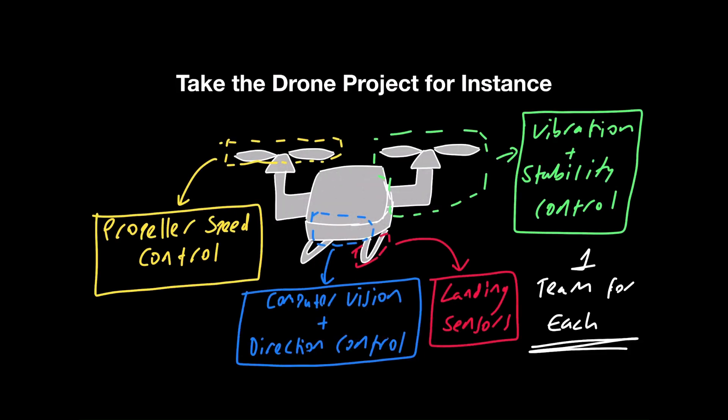Modularity is a very important design principle, as it can allow for more efficient design. The idea is to use teams of engineers and other professions to design hardware and software for a part of an overall design. Take the drone project for instance. Some important components are controlling the propeller speed and control system, the computer vision for direction control, landing sensors that need to communicate with propeller speed settings, and vibration and stability control. Each component will have its own sensors and control hardware. They can be designed separately and then combined into a larger system to build the drone. The teams will need to communicate what they are doing and how, often overseen by a project manager. None of the sensors in each part will affect the sensors used in other parts, but the result will need to be communicated to a main controller.